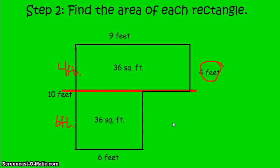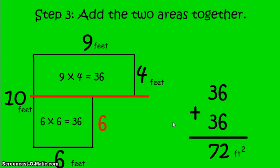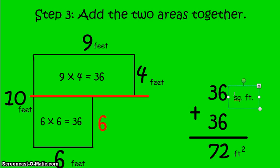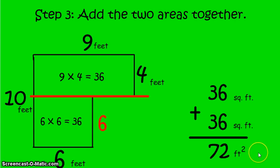So I've done step one — splitting the shape into two rectangles. Step two was finding the area of each rectangle. Step three is to add the two areas together: 36 square feet plus 36 square feet equals 72 square feet. Whether you call it square feet or feet squared, it means the same thing. Those are the three steps to solving the area of irregular rectangles.